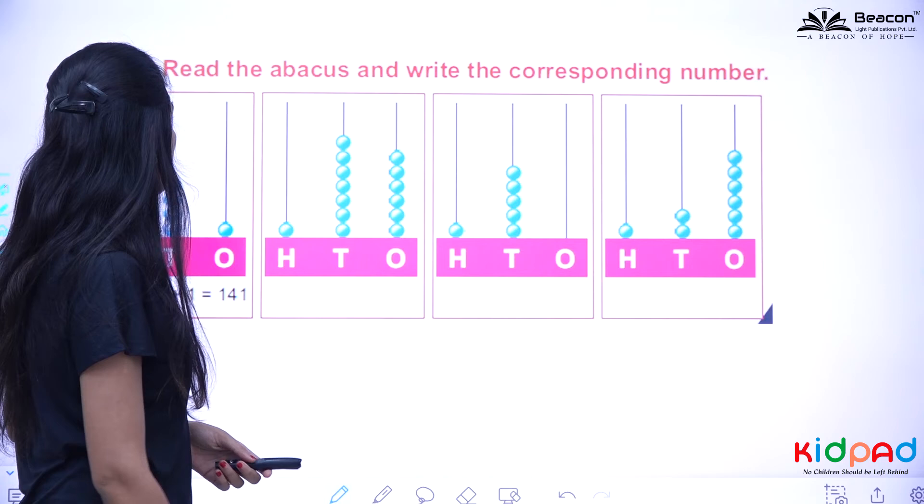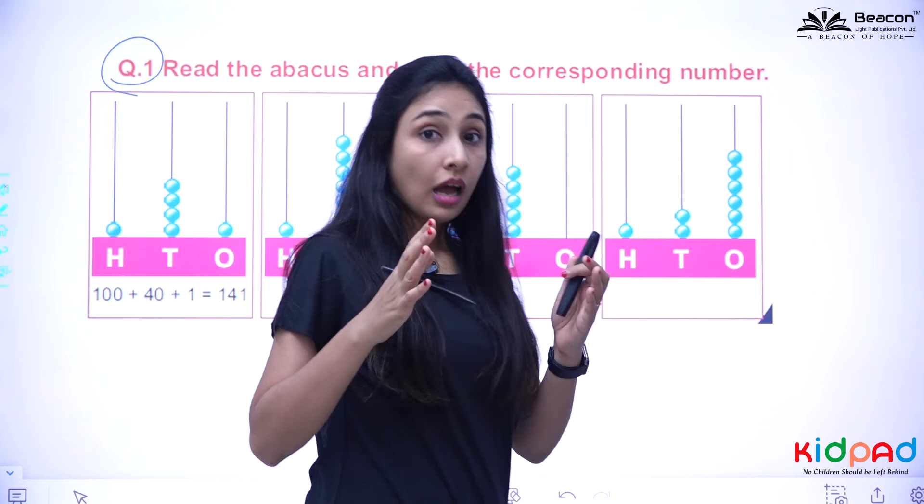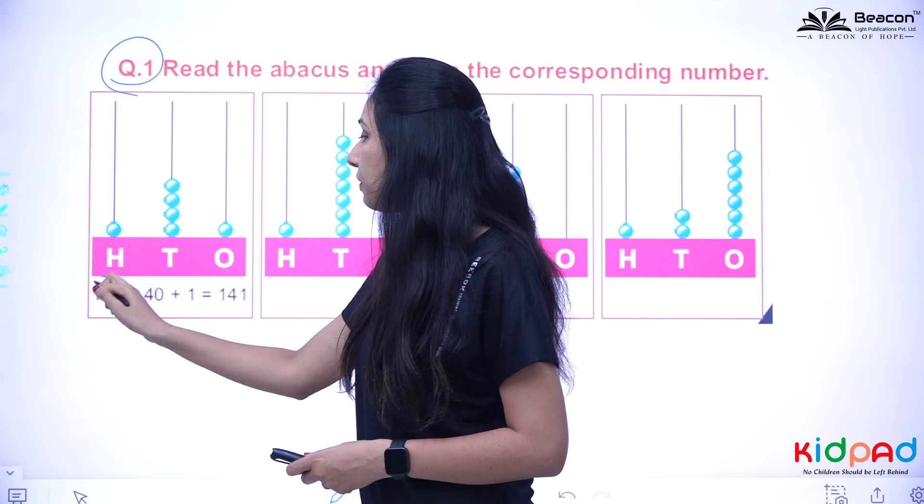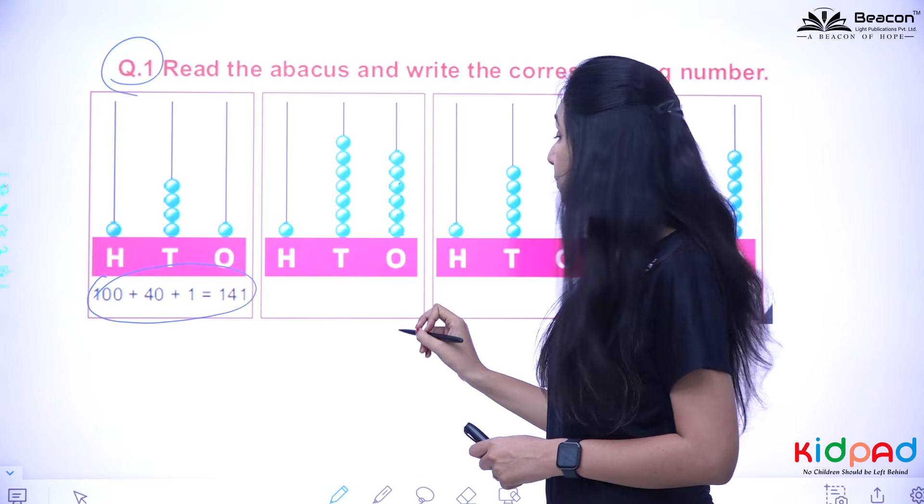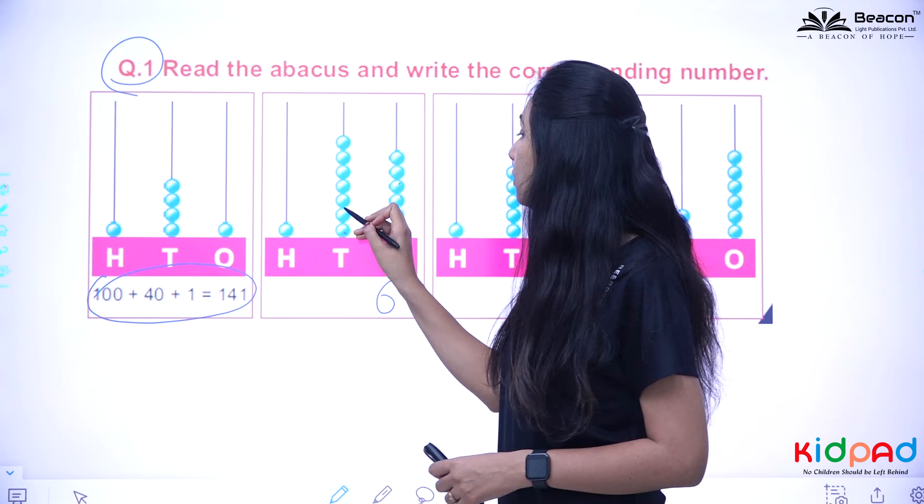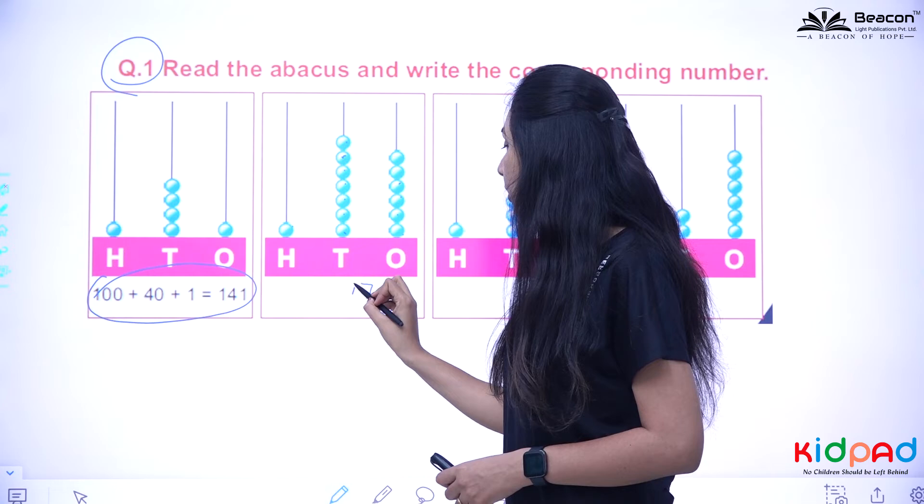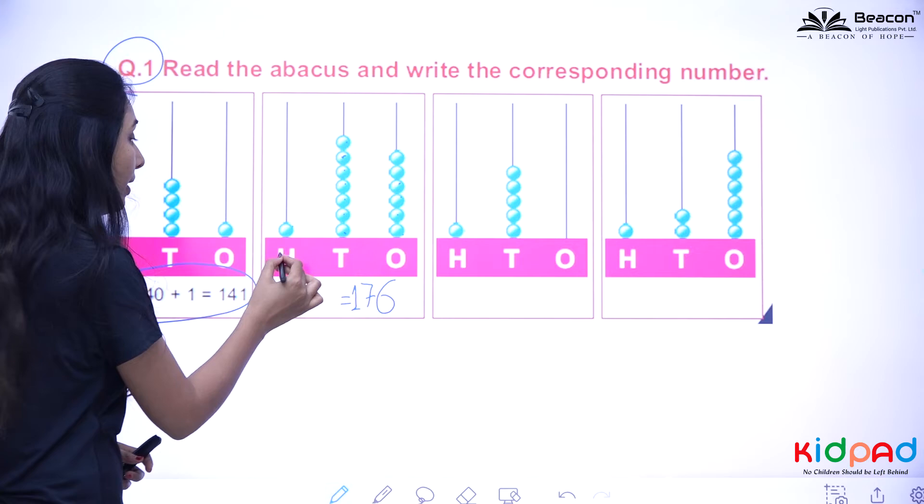Now question number 1 is read the abacus and write the corresponding number. The first is given to you. The second I am going to tell you, and the third and fourth you will be doing in your homework. 1, 2, 3, 4, 5, 6. Six beats in this first rod. Make it 6. At which place? Ones place. 1, 2, 3, 4, 5, 6, 7. Seven and 1. 176.